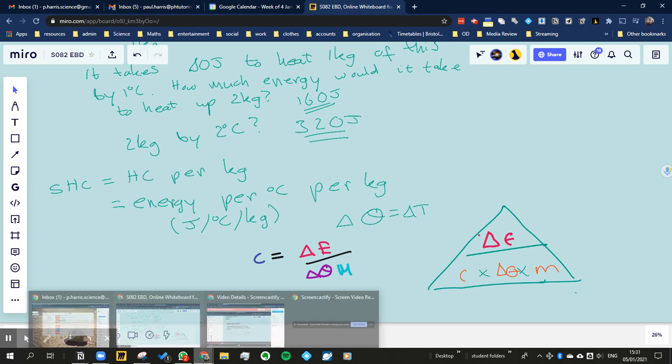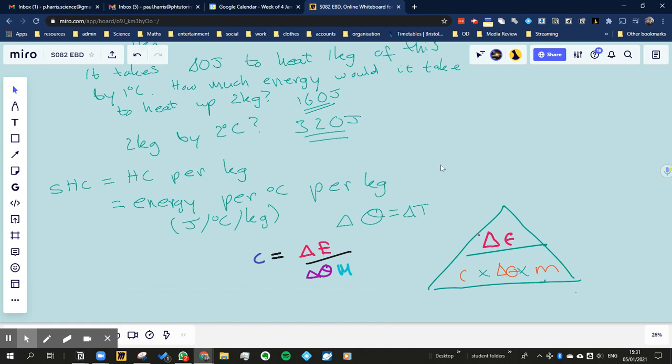And then we would use that formula triangle to work out any question you want. Maybe they ask, maybe they give you, they'll always give you three things in some way or another, and you have to work out the fourth thing. Okay. So that's what specific capacities. We'll do some questions now then.